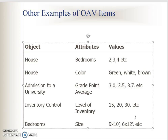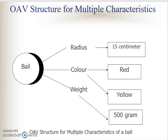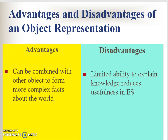In the same page there is an exercise where I give you an image and you have to describe all the objects in that image. You can represent it using a table or create an OAV diagram — if you have 5 objects, you need 5 circles or ovals. The advantages of OAV are that it can be combined with other objects to form more complex facts about the world. The disadvantage is its limited ability to explain knowledge, which reduces its usefulness in expert systems. Try the exercise, discuss with friends, and we can also discuss it during the tutorial. Then we will continue with frames.